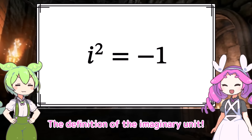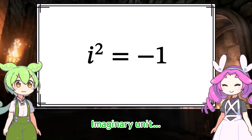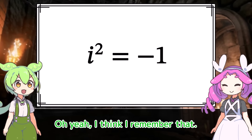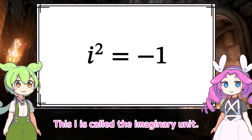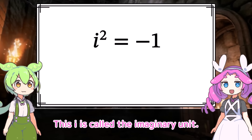This is the definition of the imaginary unit. Imaginary unit? I think I remember that. I is the number that becomes negative one when squared. This I is called the imaginary unit.